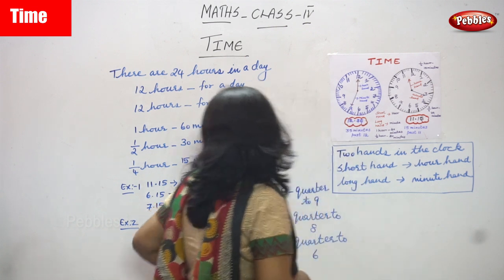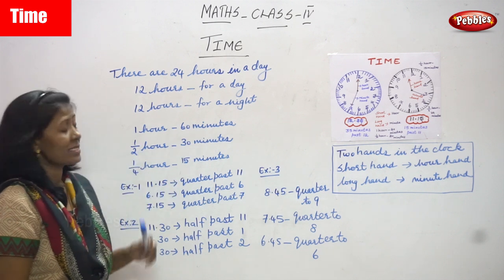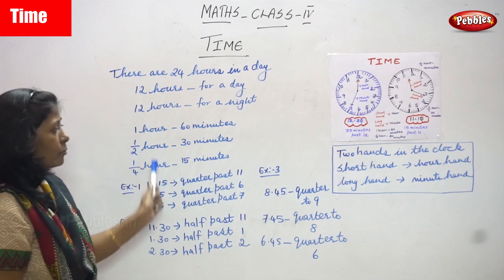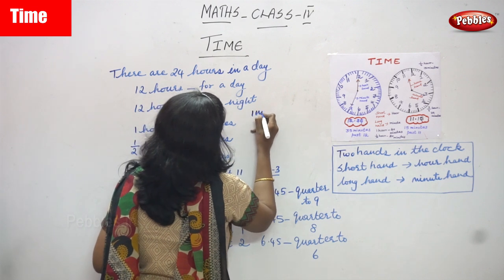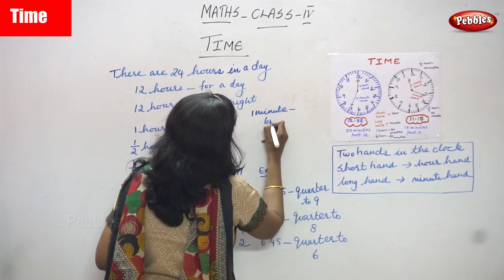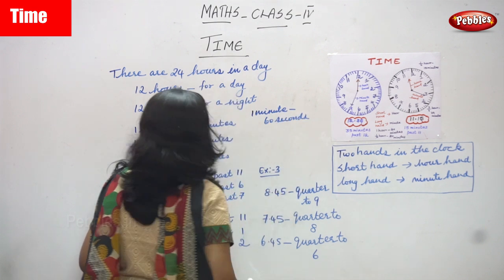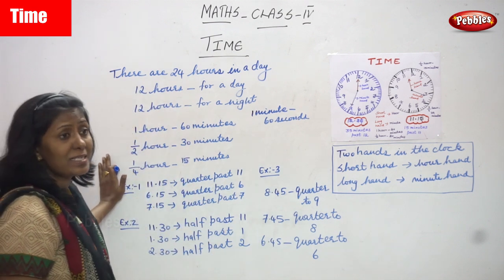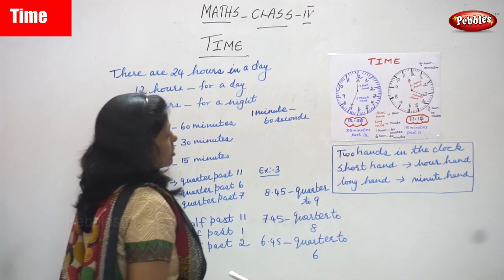One hour is equal to 60 minutes. Half an hour is equal to 30 minutes and a quarter hour is 15 minutes. One minute is equal to 60 seconds. These are the important and basic things about time — you have to memorize them, don't forget.